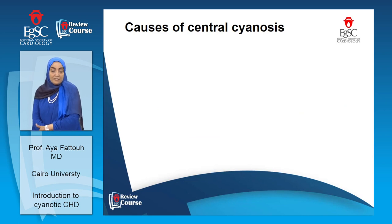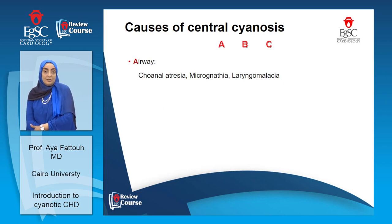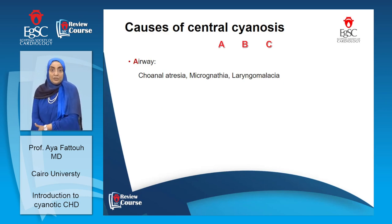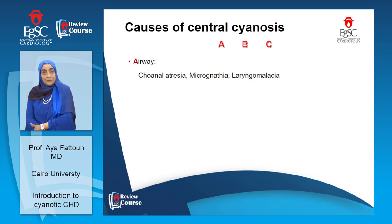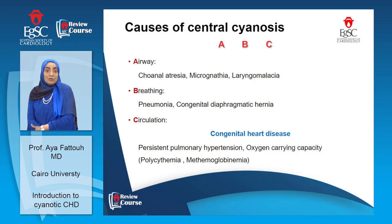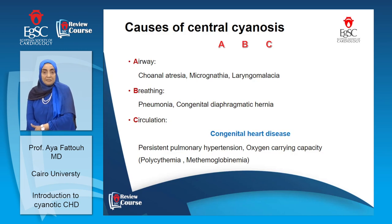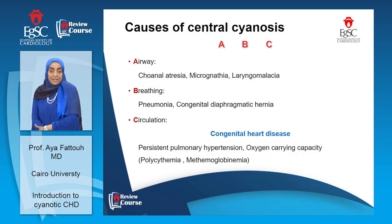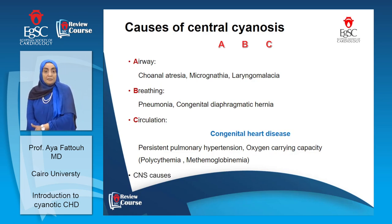If we settle that it is central cyanosis, we have to search for the cause and remember ABC. It could be due to airway obstruction — for example, neonates born with choanal atresia, laryngomalacia, or micrognathia — or due to breathing problems like parenchymal lung problems, pneumonia, or congenital diaphragmatic hernia, or due to cardiovascular problems, on top of which is congenital heart disease. Others include abnormalities in hemoglobin, persistent pulmonary hypertension of the newborn, and CNS causes which might cause respiratory depression and cyanosis.